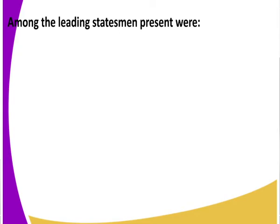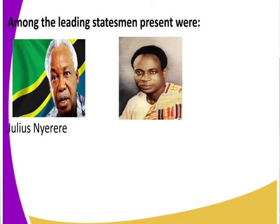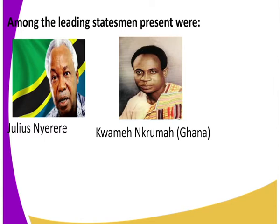The first leading statesman was Julius Nyerere — not Nelson Mandela, I always confuse the two because they were both leading Pan-Africanists. Julius Nyerere was the president and founding father of Tanzania. We also had Kwame Nkrumah of Ghana, who was one of the leading Pan-Africanists in Africa and the first president of Ghana.